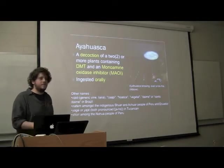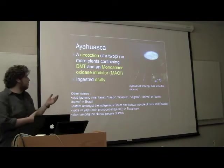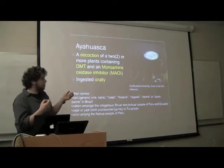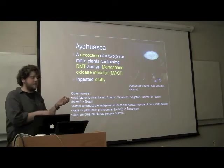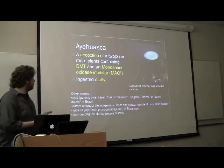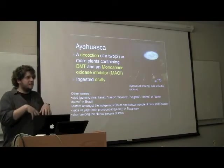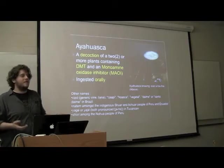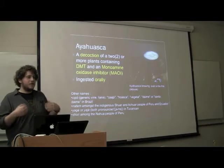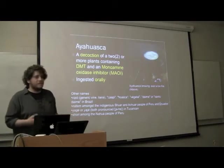Ayahuasca is a decoction made from two or more plants, requiring one to have some sort of DMT content. It'll probably also have a lot of other similar tryptamines that the plant uses, which will have their own effects. The whole mix is very hard to judge because it varies so much from source to source. It also requires a monoamine oxidase inhibitor, because when you're taking ayahuasca through the gastrointestinal tract, the MAO-A throughout the GI tract will deactivate your DMT — you don't want to accidentally trip from your lunch containing some neurotransmitter-mimicking compound.